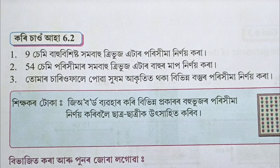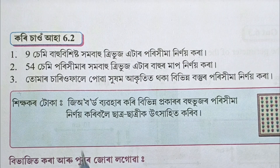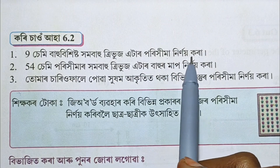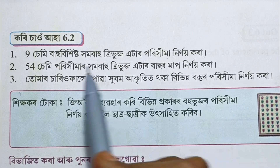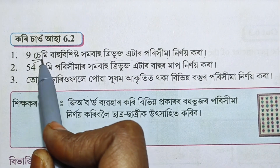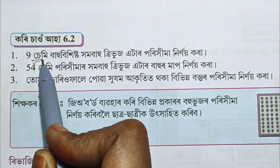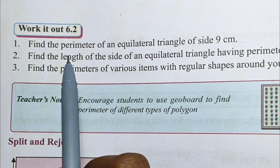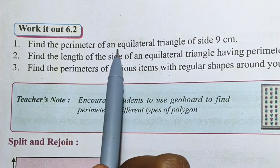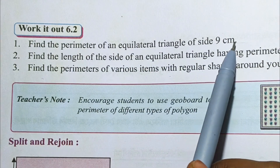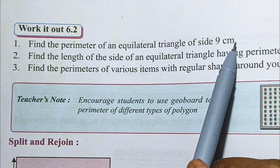Question number 1 is: Find the perimeter of an equilateral triangle with a side of 9 cm.